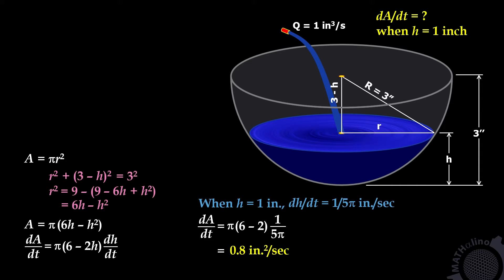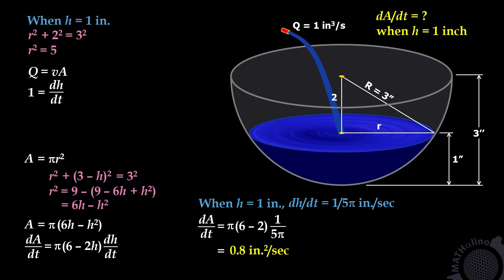Now using the formula discharge equals velocity times area in physics, we can eliminate the steps involving the volume of water inside the tank as a spherical segment. Going directly to the condition when h equals 1 inch: by Pythagorean theorem, r squared plus 2 squared equals 3 squared, so r squared equals 5. Discharge equals velocity times area: discharge is 1, velocity is dH/dt, and area is pi times r squared equals 5pi. Therefore, dH/dt equals 1 over 5pi inch per second — the same value as before.